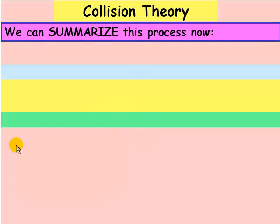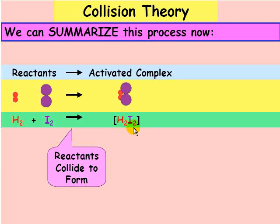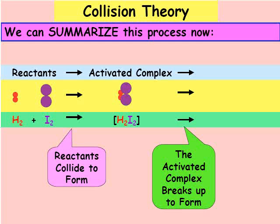We can summarize this whole process now. The reactants, H2 and I2, collide to form the activated complex, H2I2, an unstable arrangement. The activated complex then breaks up to form the products, two molecules of HI.